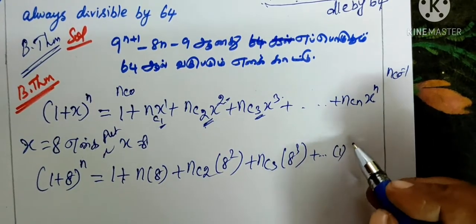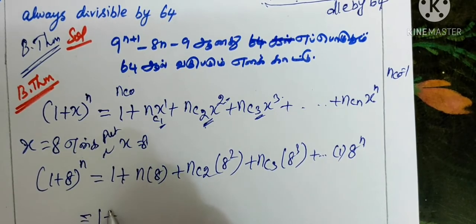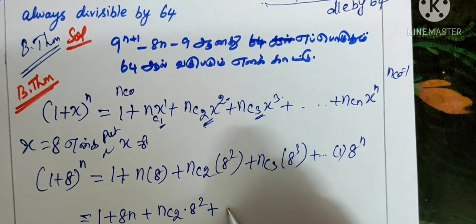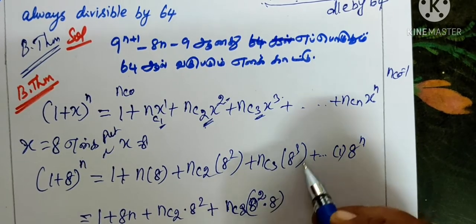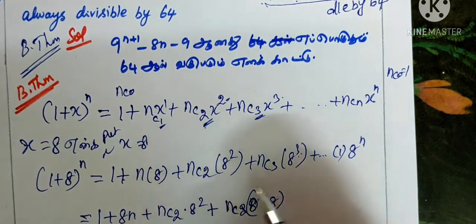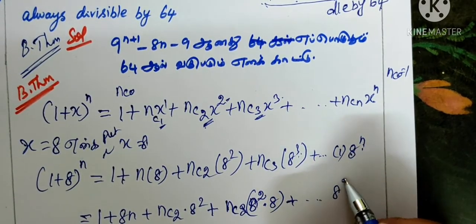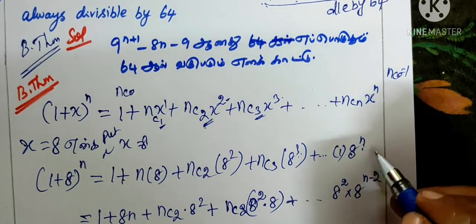The last term is ncn. Since ncn equals 1, it's 8 power n. nc2, nc3, 8 squared into 8. 8 cube can be split.